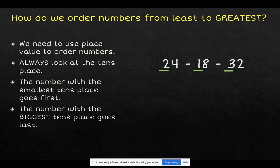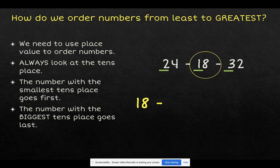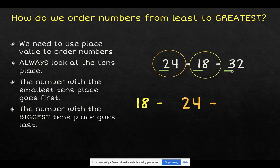Now that you have looked at your tens place, you need to decide which one of these three numbers has the smallest tens place. The number 18 has the smallest tens place, so we will write 18 first. Then, out of 24 and 32, 24 has the smallest tens place, so we will write 24. Leaving us with 32 having the biggest tens place, so 32 will be the last number that we write.